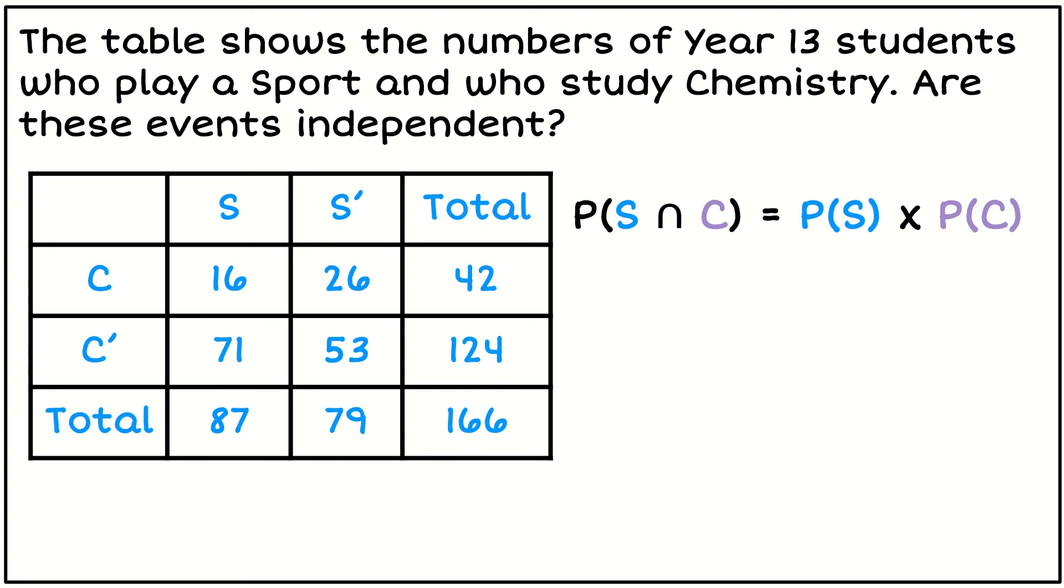So if I use my intersection rule first, what I want to do is I want to first look for the intersection between sports and chemistry. So I've got 16 students out of 166 who take sports and chemistry. Then I want to look for the probability of doing sports. So the probability of doing sports, well there's 87 students that do sports out of the 166. And to find probability chemistry, well there are 42 students out of the 166 that take chemistry. So I want to find out do these two things equal, does the left hand side equal the right hand side or not.